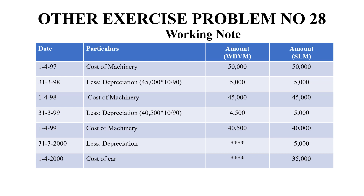First, we follow the written down value method, so we work in reverse order. For example, in 1499 the value of the asset is $40,500. We will take the straight line method for the second version. The net path value is $500.